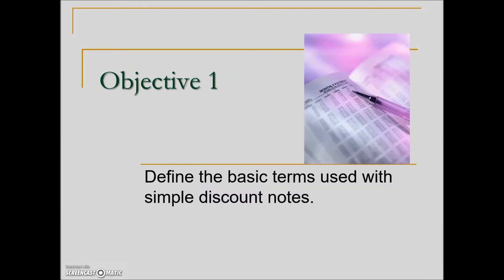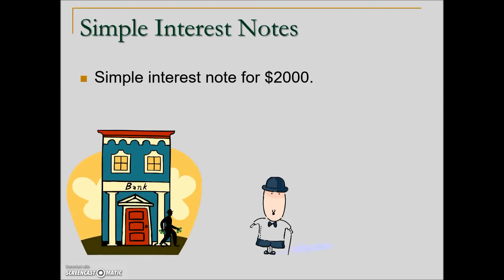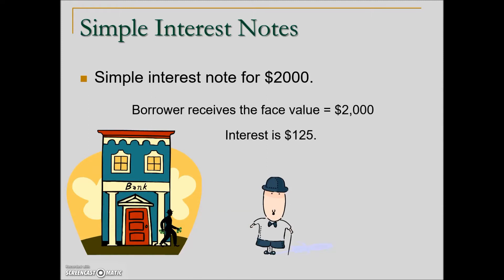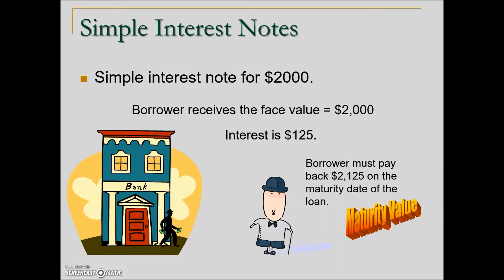Simple discount notes. In this first part of section 9.3 we'll take a look at the basic terms used with simple discount notes. A simple interest note works like this: someone borrows $2,000, they're charged interest of $125, and at the maturity date they will have paid back the principal or face value of the loan plus the interest. This is known as the maturity value.